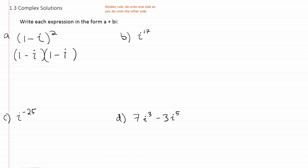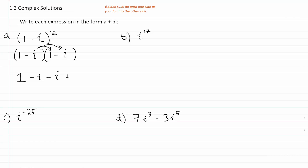We'll have 1 times 1, which gives you just 1, and then 1 times negative i, which gives you minus i. Then negative i times 1 gives you another negative i. And then negative i times negative i gives you a positive i squared. From here we'll combine like terms, so these two negative i's come together as just minus 2i.